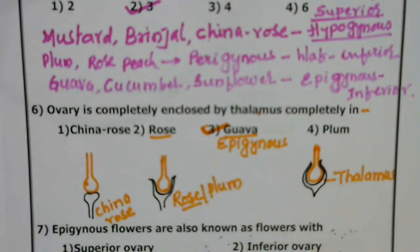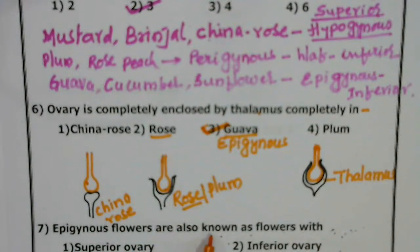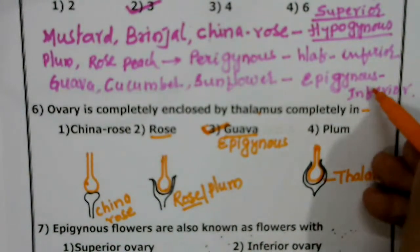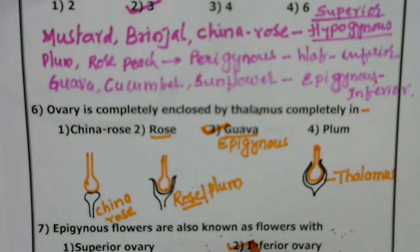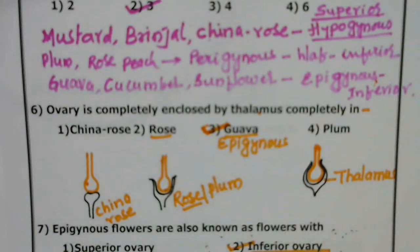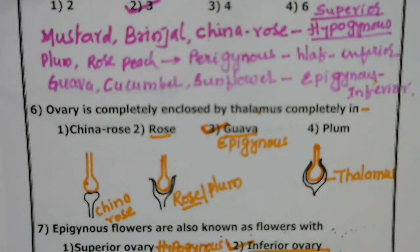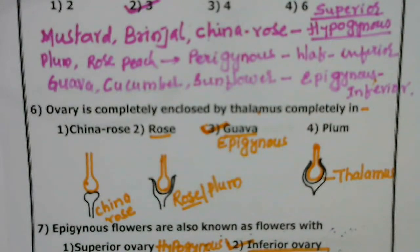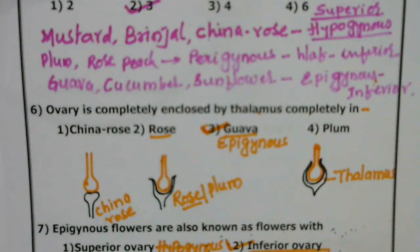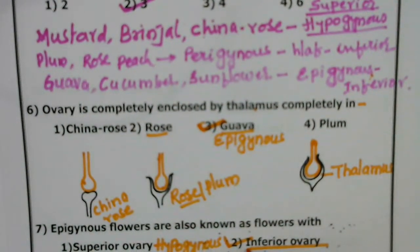Epigynous flowers are also known as flowers with inferior ovary. The hypogynous ovary is called superior. The epigynous ovary is called inferior. And the perigynous ovary is called half-inferior. So the correct answer is inferior ovary.